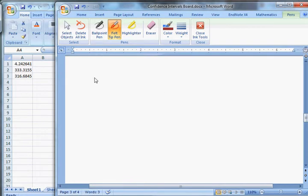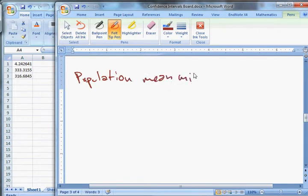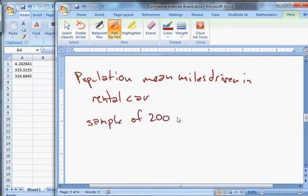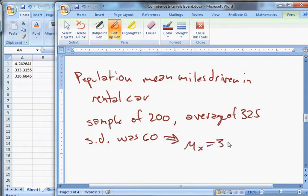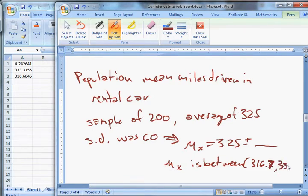We were talking about rental cars, the average miles. We want to know the population mean miles driven in a rental car. Well, we had a sample of 200, the average of 325. We knew the standard deviation was 60. And then what we said is, well, our best guess, mu x equals 325. And then that's plus or minus something, right?